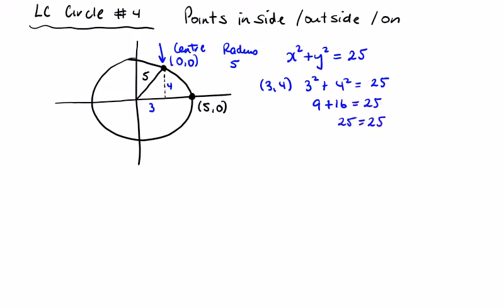Therefore we can say it's on the circle. When it's exactly equal, the left-hand side to the right, it's on the circle. Now let's pick a point inside here. Let's pick the point (1,1) somewhere here.